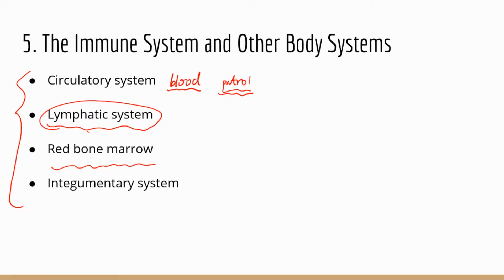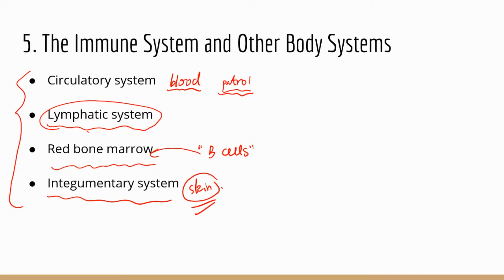Immune cells like B cells and T cells are all produced in the red bone marrow. In the case of B cells, they also mature in red bone marrow — they are produced and go through maturation there. The integumentary system — mostly the skin — is part of the physical barrier, the first line of defense in the immune system.